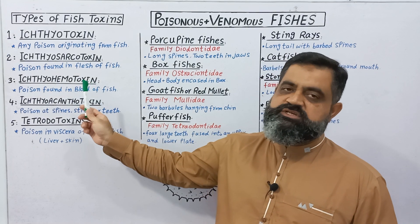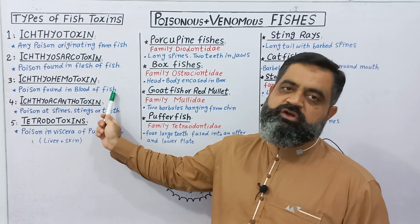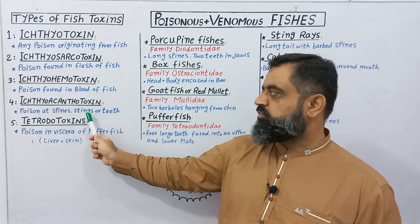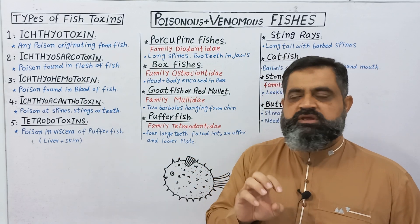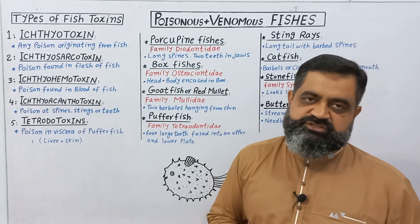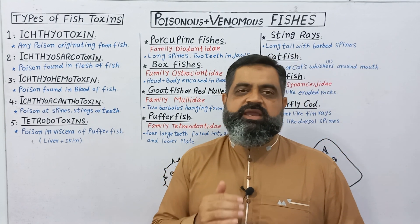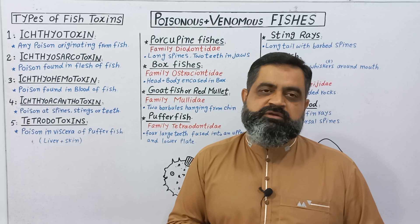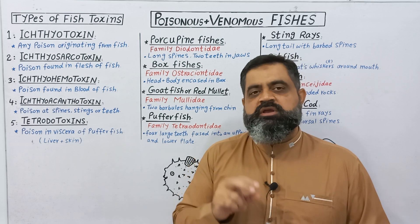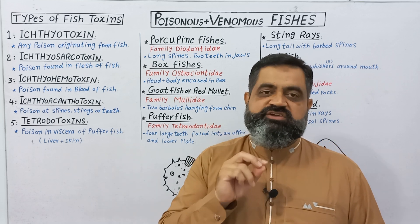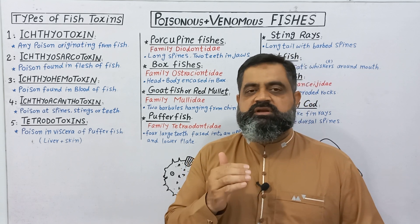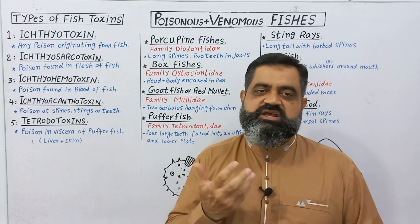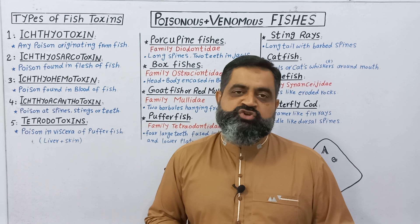The third type is Ichthyohemotoxin — such toxins are found in the blood of fish. The fourth is Ichthyoacanthotoxin. This type of poison is present in the spines, stings, or teeth of the fish. Usually this type of toxin can be injected by the bite or stings of fishes. These toxins are present in a sac-like structure known as venomous glands, and these poisons can be transmitted to other animals with the help of stings, just like a snake bite or a scorpion bite.